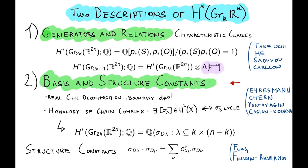In the situation of real Grassmannians, the situation is less simple. As we already saw in the examples before, these contain a lot of two-torsion classes. So as a first approximation, we might try to understand what happens with rational coefficients.